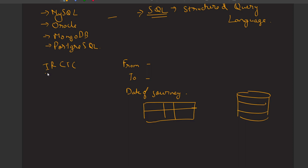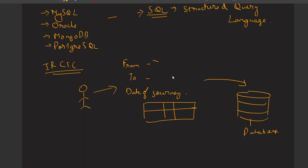Let's suppose IRCTC has a database. This database has all the information about the trains - when they start, from where they start, when they arrive at the destination. When a user fills the form with the from, to, and date of journey, it goes to the database, and whatever data matches that information is fetched and presented in front of the user on the website. That is the simplest real-time example of a database.